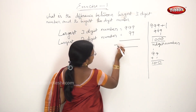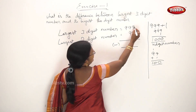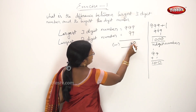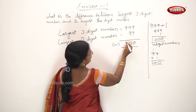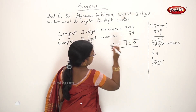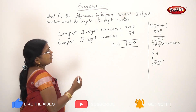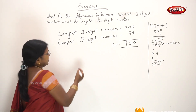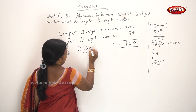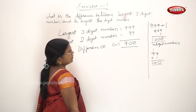Difference means subtraction: largest 3-digit number minus largest 2-digit number. 999 minus 99. The difference is 900.